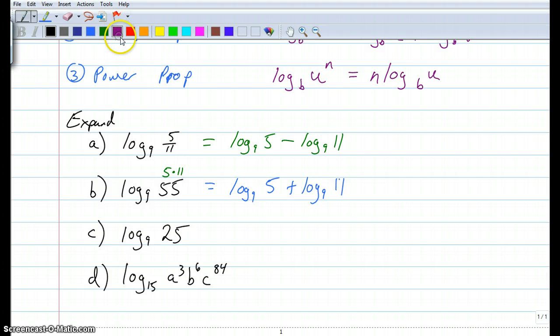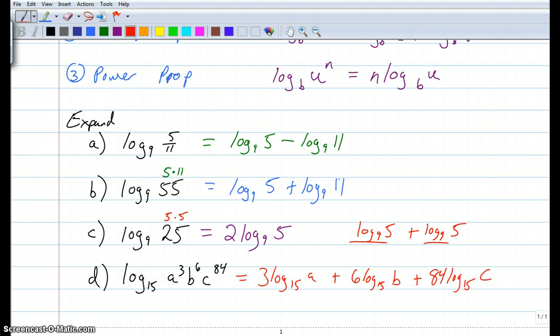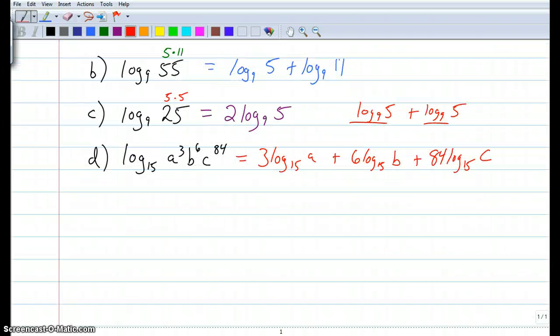Hopefully for part c you got 2 times the log base 9 of 5. Now, there's a couple of ways to do this. 25, of course, is 5 squared, in which case we use the power property and do 2 log base 5. Or if you did 5 times 5, that would be log base 9 of 5 plus log base 9 of 5. And these are like terms, so that still gives us 2 log base 9 of 5. For good measure, here's one more.